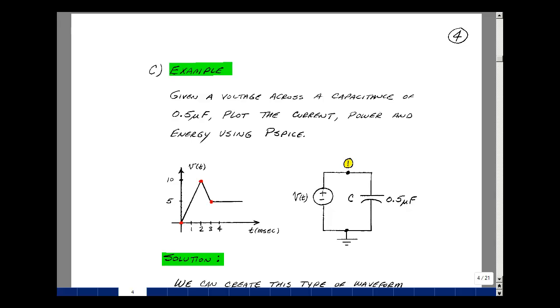This lesson deals with a capacitance example using PSPICE. You can find these notes in the ECE 201 ebook in chapter 6 starting on page 4. Suppose that I have this voltage across the capacitance whose value is 0.5 microfarads and then I want to plot the current through the power absorbed and the energy absorbed using PSPICE.